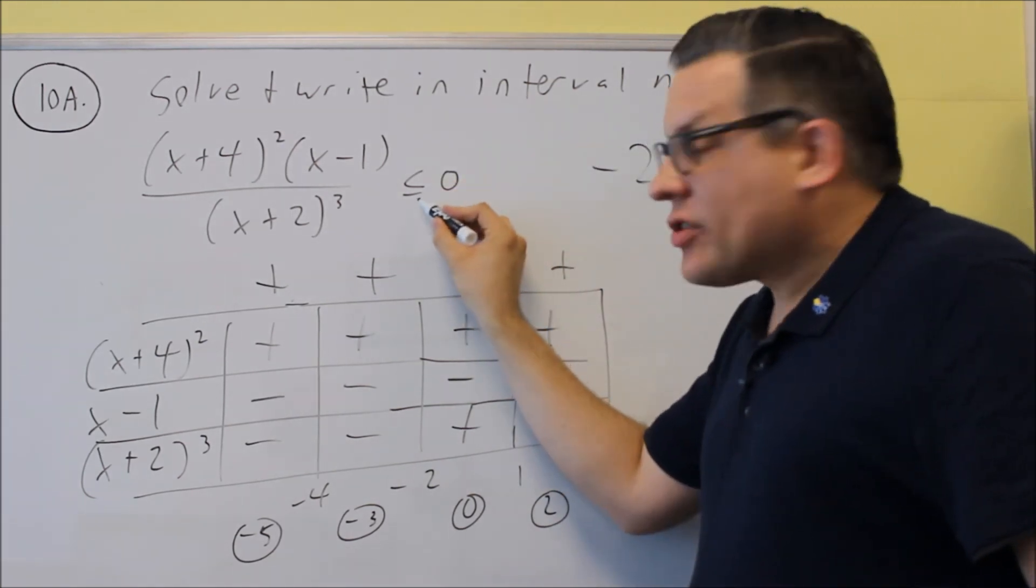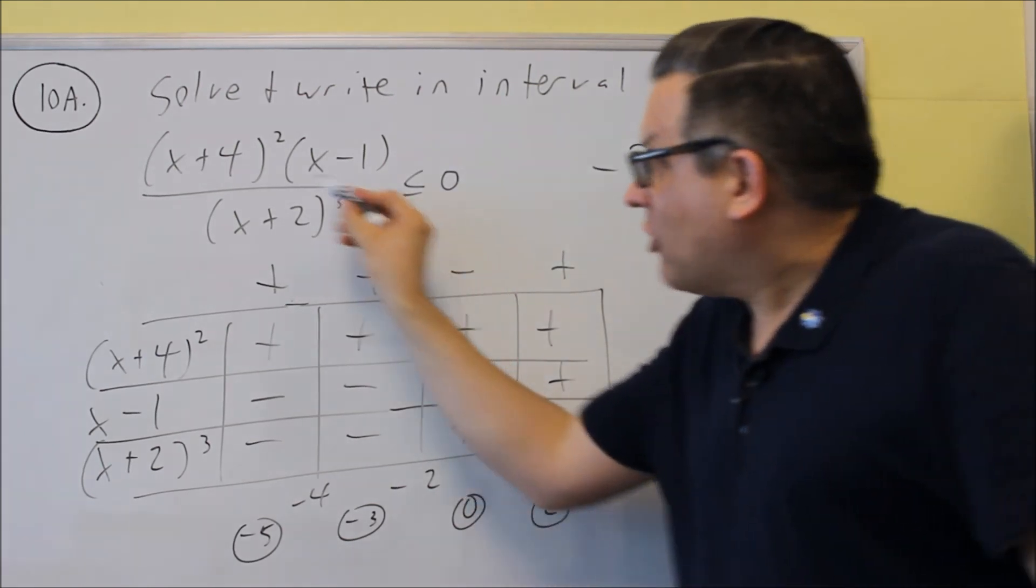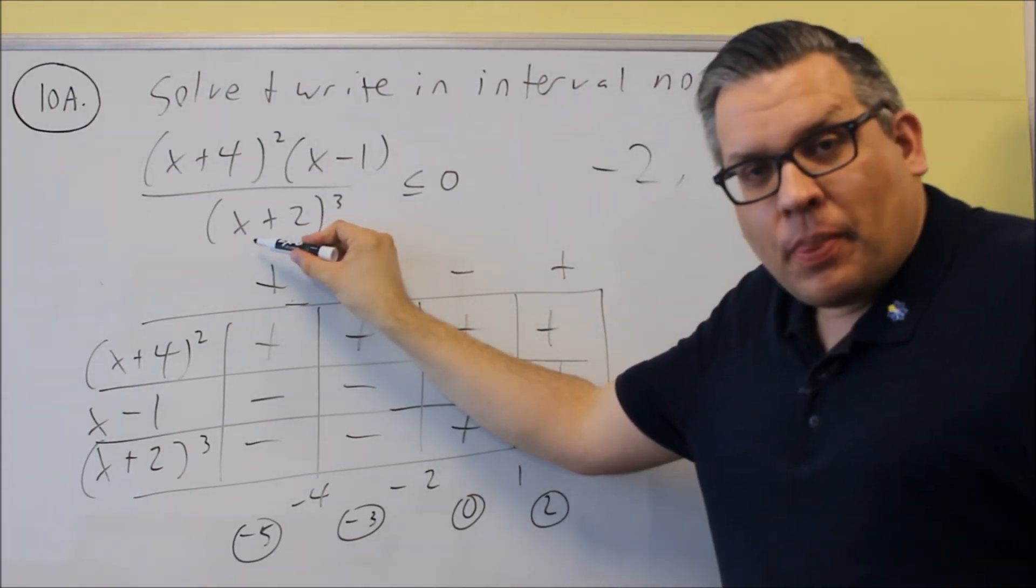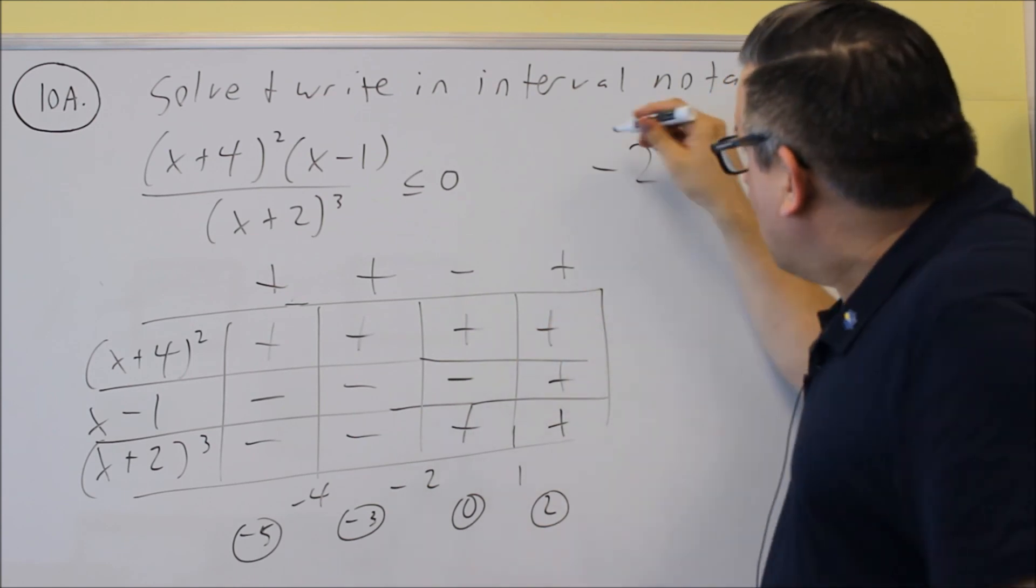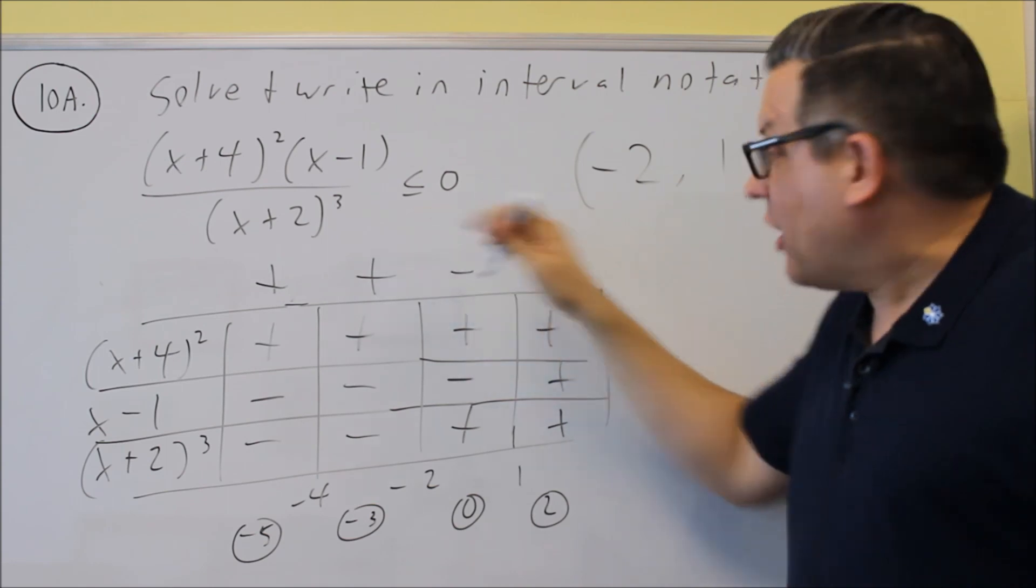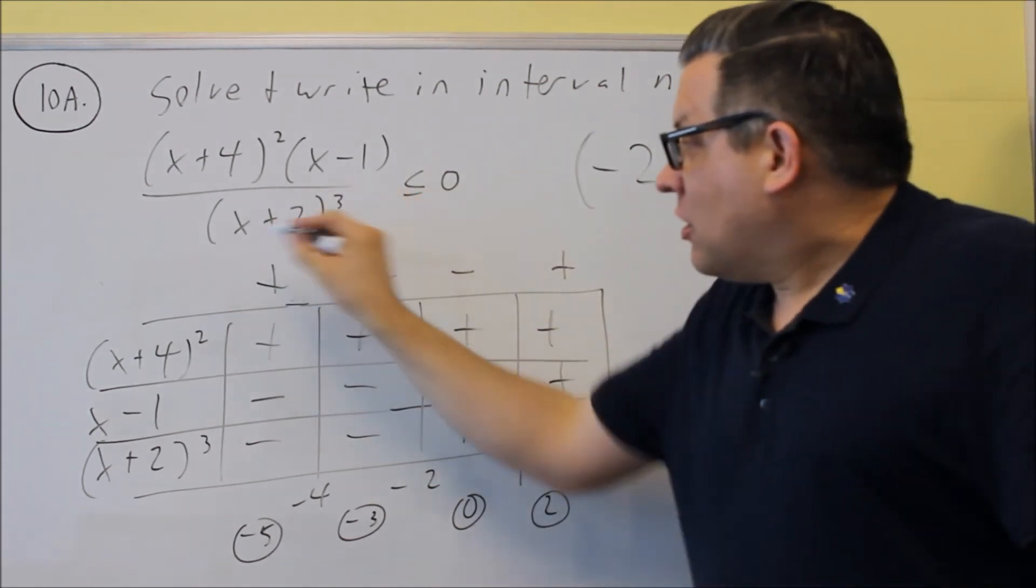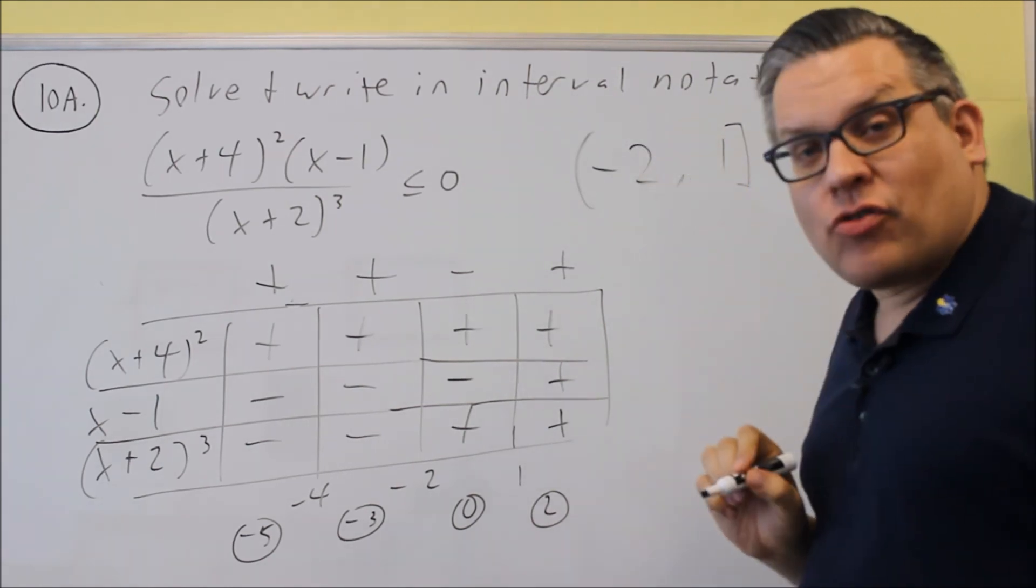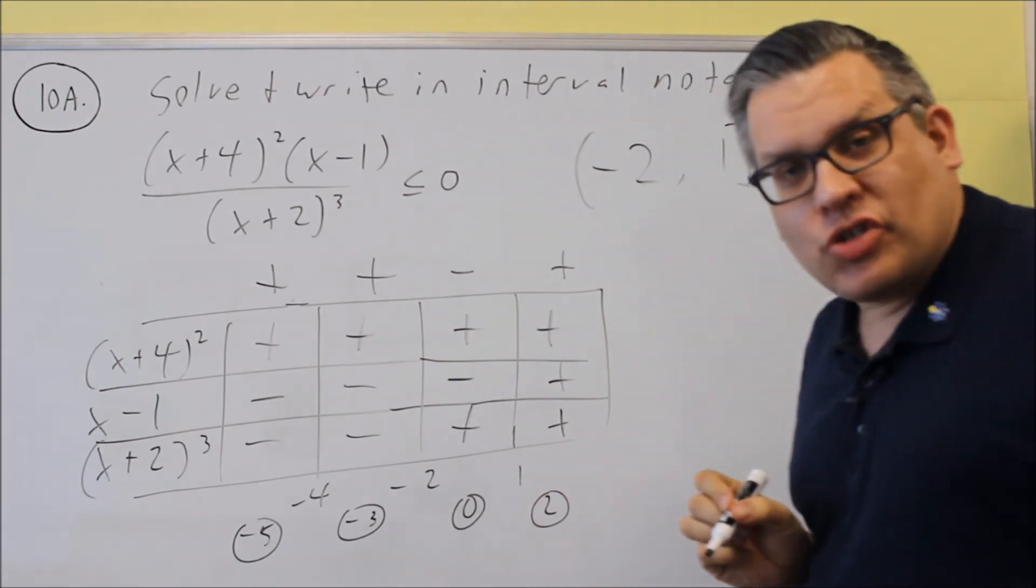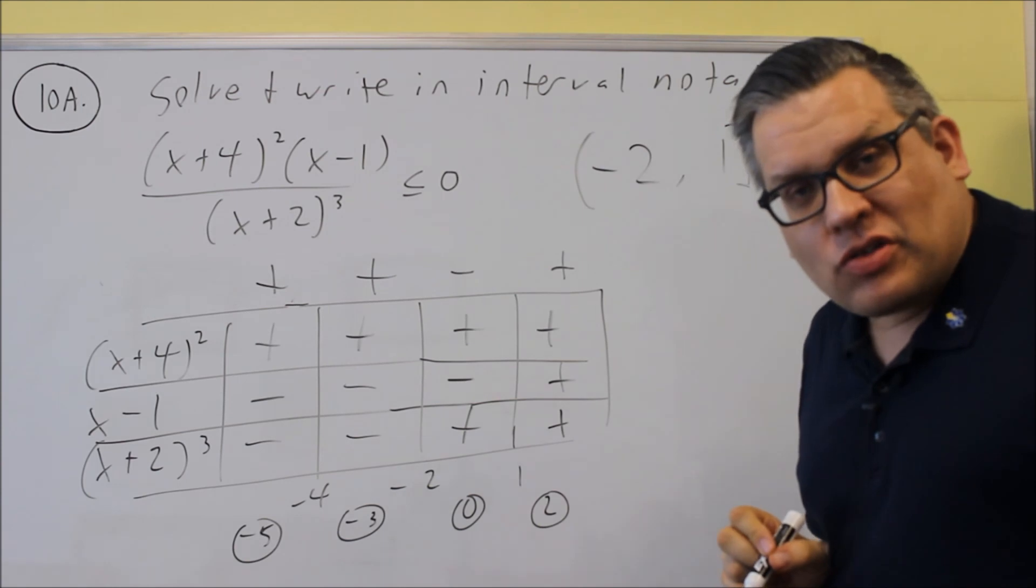Now usually, if you have a less than or equal to, you're going to have brackets around all your answers. However, if you have a division like we have here, we know that we can't include negative 2 because that causes division by zero. So I know no matter what, negative 2 needs to have a parenthesis. Even though this has an equal sign on it, and normally I would have brackets on it. So if I didn't have that factor down below, then I could have brackets for all this. However, negative 2 makes the bottom zero, and I can't divide by zero, so therefore that's why I'm including a parenthesis on this one.